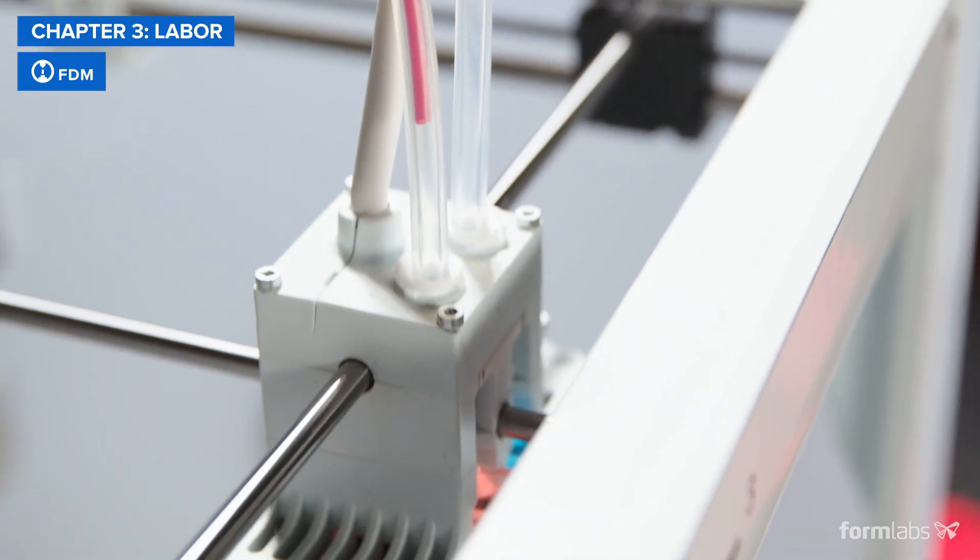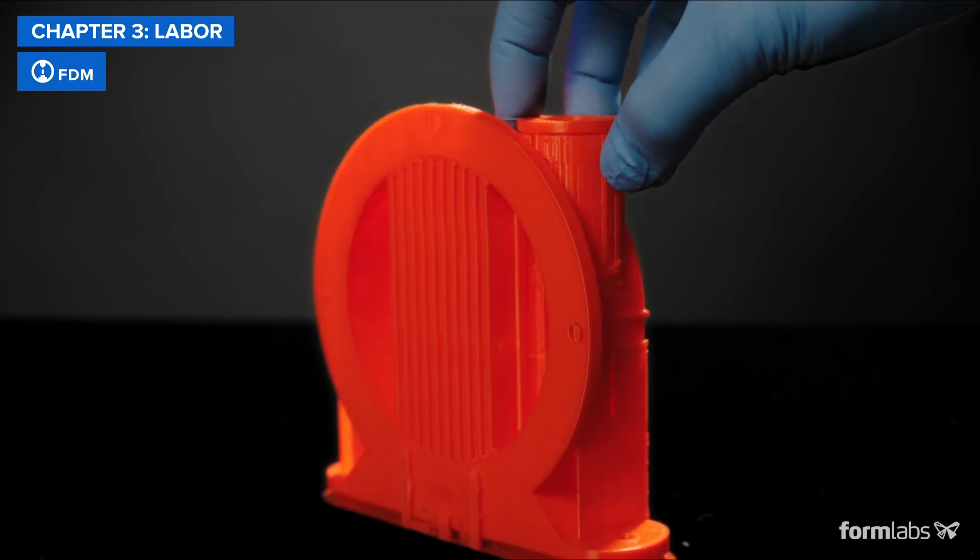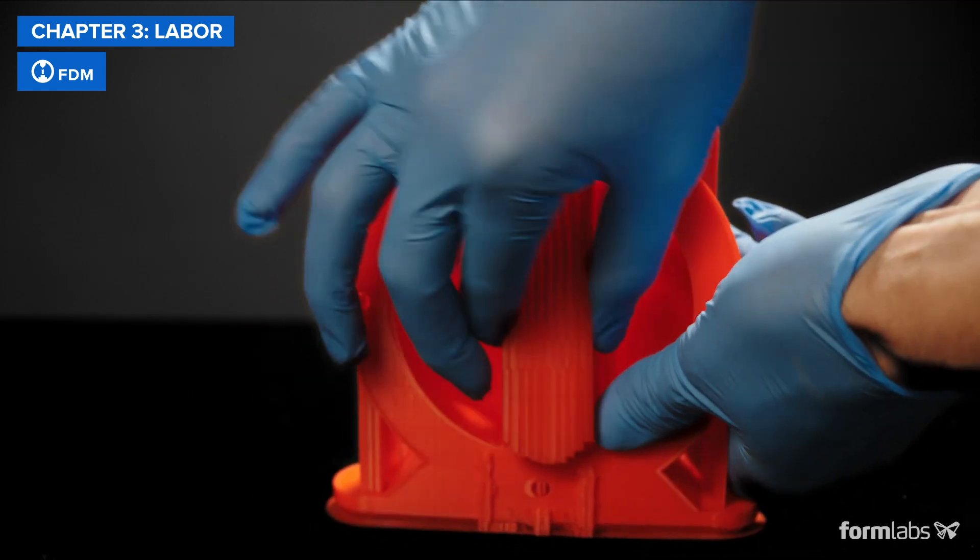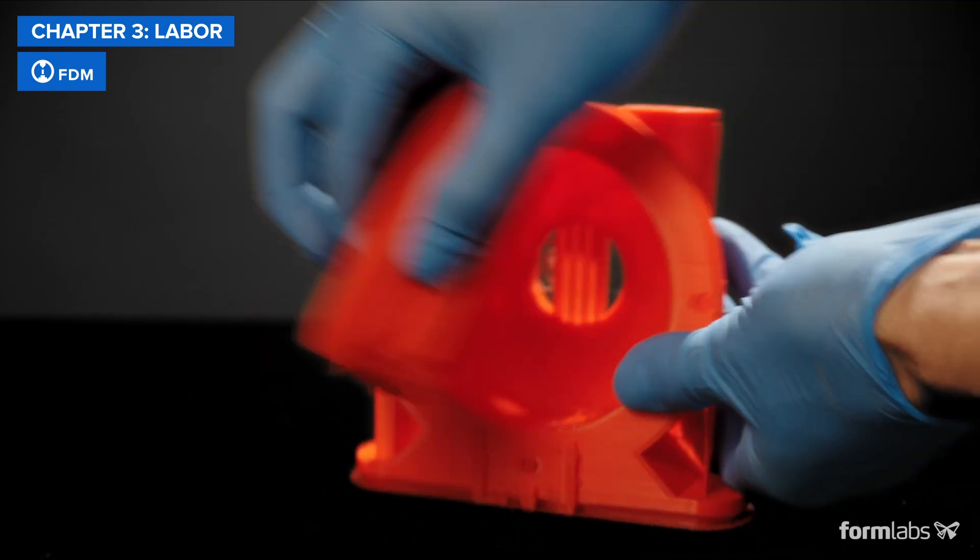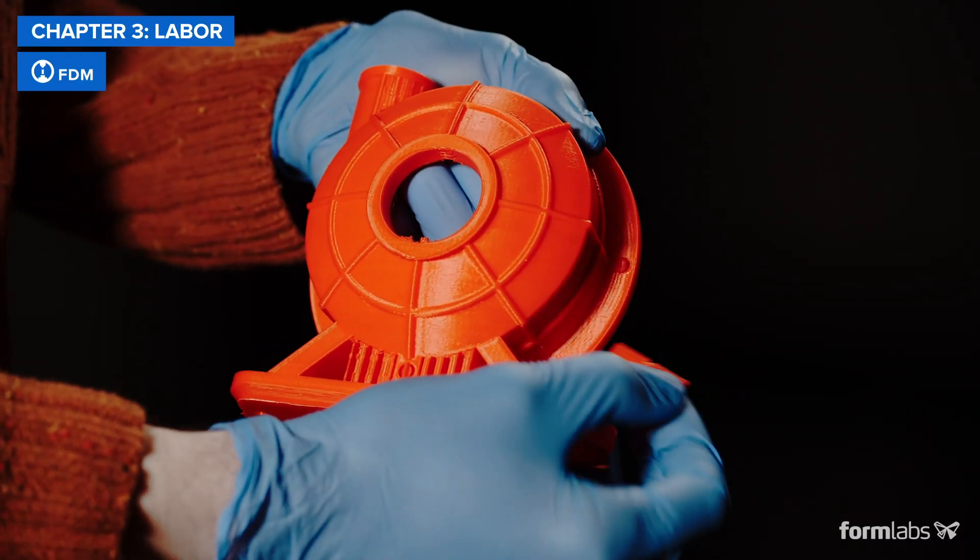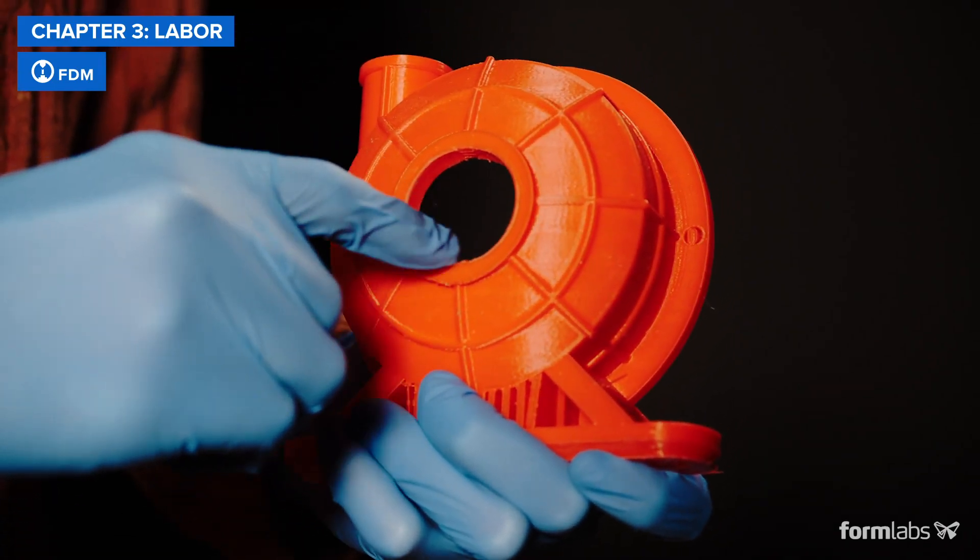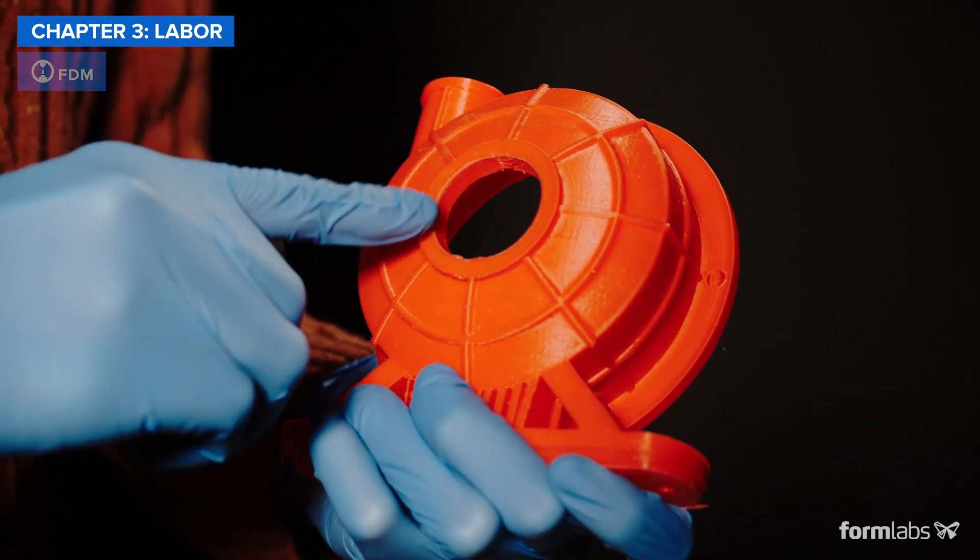In most cases, setting up and maintaining FDM printers is fairly easy. Post-processing parts can be fast too, but only for simple parts and rough prototypes. Complex parts require support structures that either break away or need to be dissolved in water or using chemicals. Achieving a better surface quality often requires lengthy manual sanding and finishing.